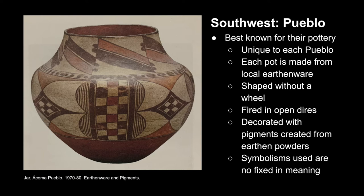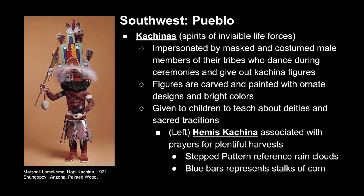Most pueblos recognize the spirits of invisible life forces. However, these are known to the Zuni Pueblo and neighboring Hopi areas as kachinas. To teach children of the tribes about these spirits, male members would dress up in masks and costumes to impersonate these spirits and give out kachina figures or dolls. They were intricately carved and painted with ornate designs using bright colors. The example we see here would be created by Hopi and Zuni fathers and uncles to give to their children to teach about sacred traditions. This is the Hemiskatina, which is associated with prayers for plentiful harvests, reflected in the stepped pattern meant to reference rain clouds and the blue bars meant to reference stalks of corn.